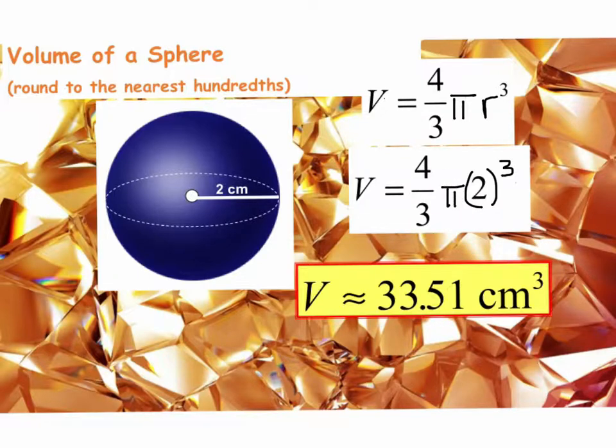But to help you right now, you would want to do two to the third times pi, then times four, then divide your answer by three. That's the best way to do it. And we get 33.51 centimeters cubed.